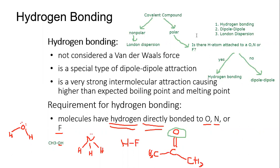So to summarize the decision process for a covalent compound: first ask, is it polar or nonpolar? If it's nonpolar, it's going to have London dispersion attractive forces. If it's polar, ask the second question: is there a hydrogen atom attached to an oxygen, nitrogen, or fluorine? If yes, it has hydrogen bonding; if no, it has dipole-dipole.